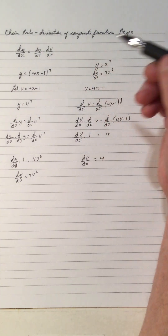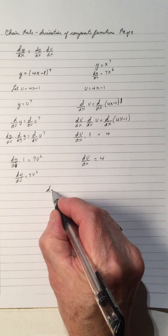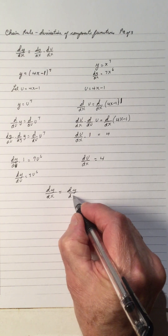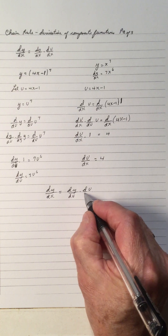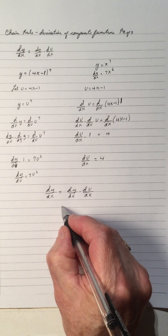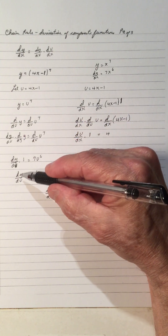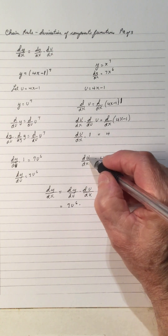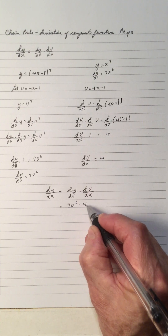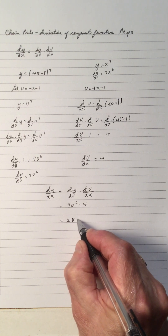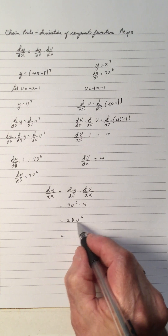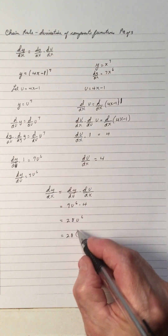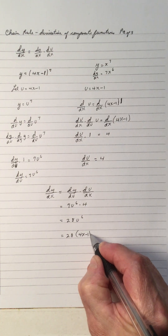dy/dx is made up of dy/du times du/dx. dy/du is 7u to the 6, and du/dx is 4. Multiplying those two, we get 28u to the 6, which is 28 times (4x minus 1) to the 6.